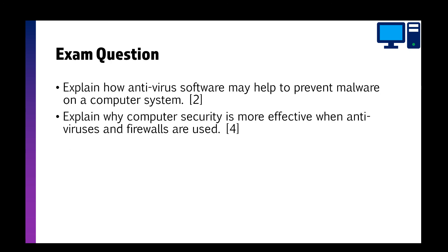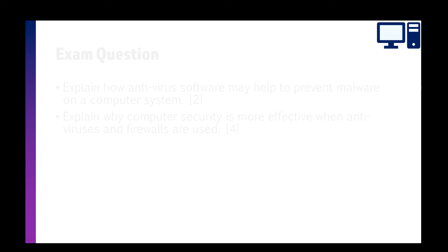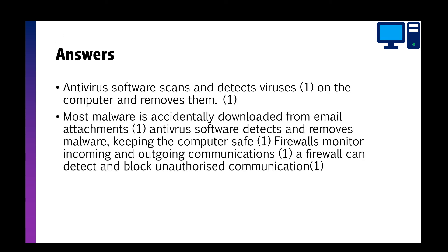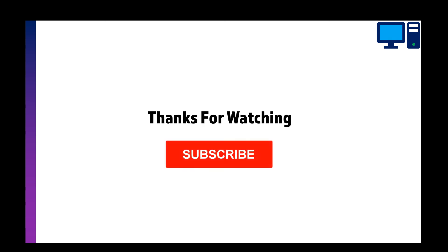Here's a quick exam question worth six marks: explain how antivirus software may help to prevent malware on a computer system, and explain why computer security is more effective when antivirus and firewalls are used together. Sample answer: antivirus software scans, detects, and removes viruses or malware. Most malware is accidentally downloaded from email attachments; antivirus detects and removes it, keeping the computer safe. Firewalls monitor incoming and outgoing communications and can detect and block unauthorized communication.